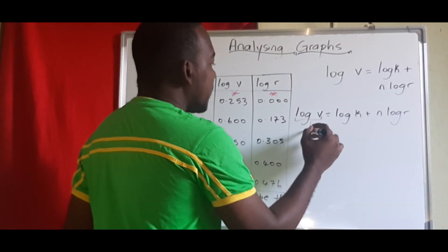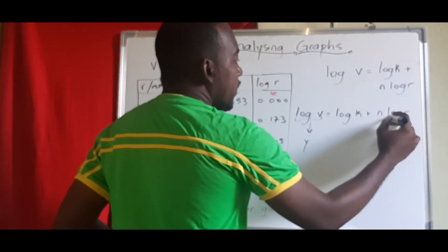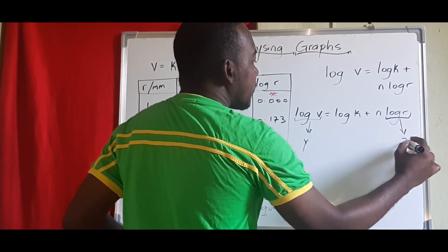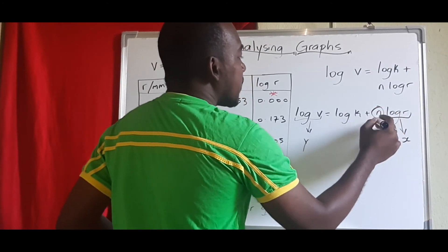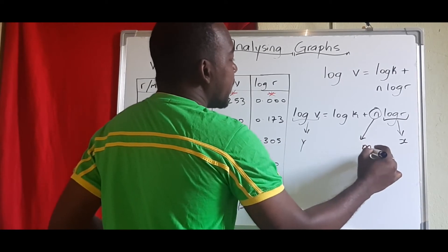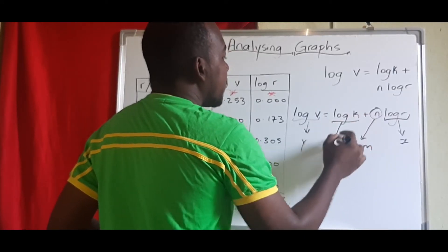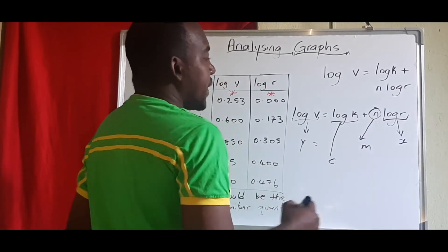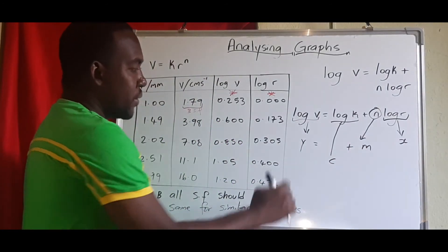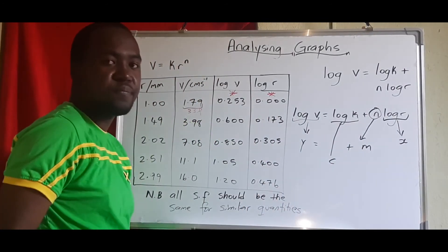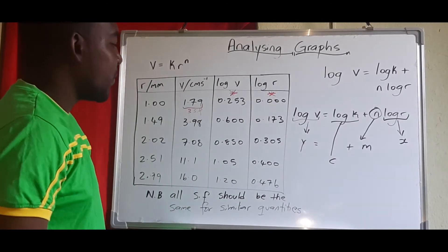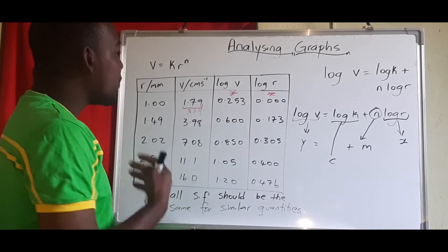So in this case, we'll plot log v on our y, log r on our x. So therefore, this constant n would be your gradient, and log k would be your y-intercept. So we get y equals mx plus c. Hope you understand that. Let's do one more.